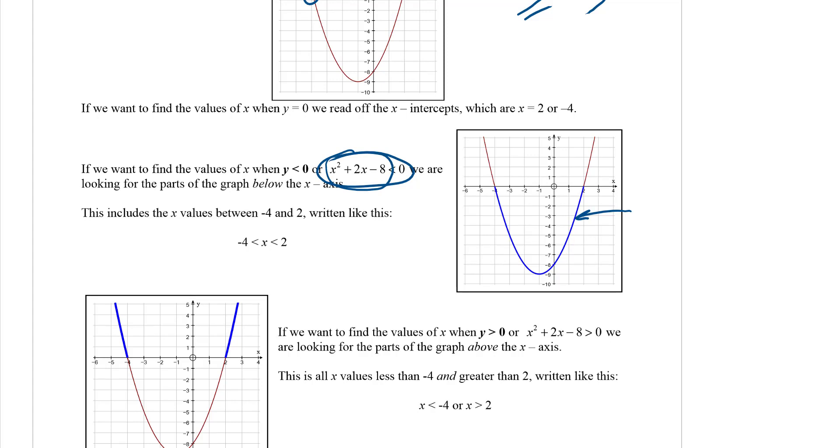So we'd write it like this: all of the x values between negative 4 and 2. If the question was changed so that we wanted to know what are the x values so this is greater than 0, in other words, what parts of the graph are above the y-axis...